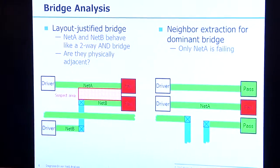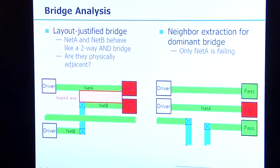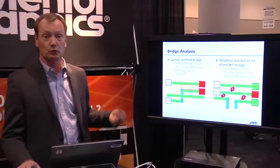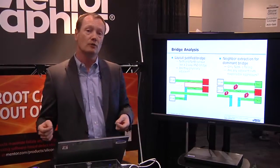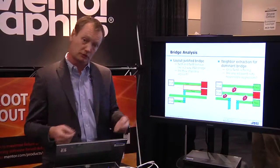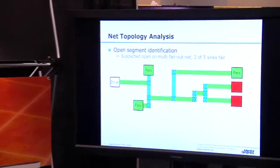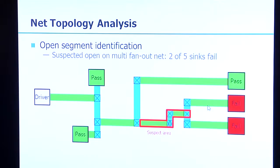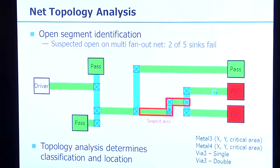For cases where we see a failure that isn't consistent — failing for some patterns but not others — this could typically be a dominant bridge or an open. We use the layout information to identify the neighbors of the failing net and look for correlation between the neighboring net values and the failing net. We use that to determine whether the suspected defect is a bridge, a dominant bridge, or an open. In cases of an open, we look at the failing sinks of a multi-fan-out net to identify the actual branch where the open is likely located, giving us a more precise location in the diagnosis results.